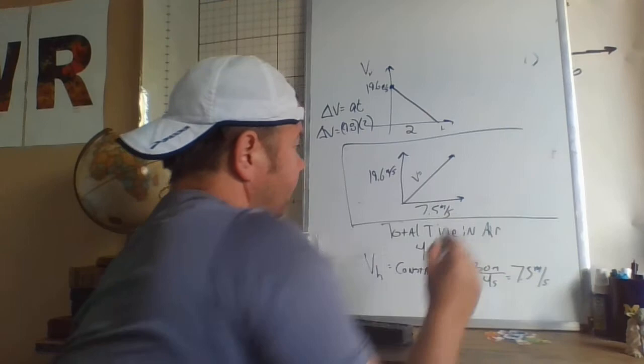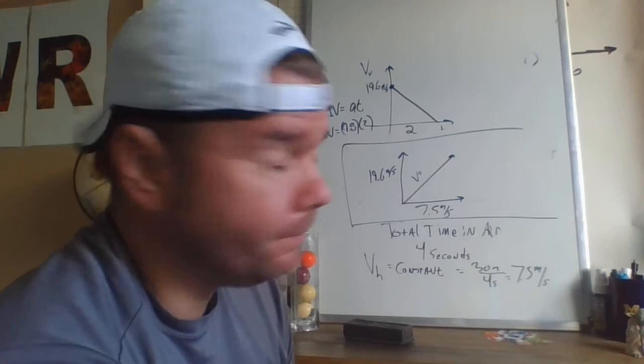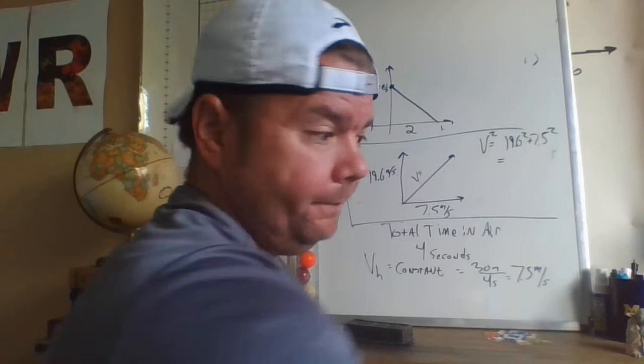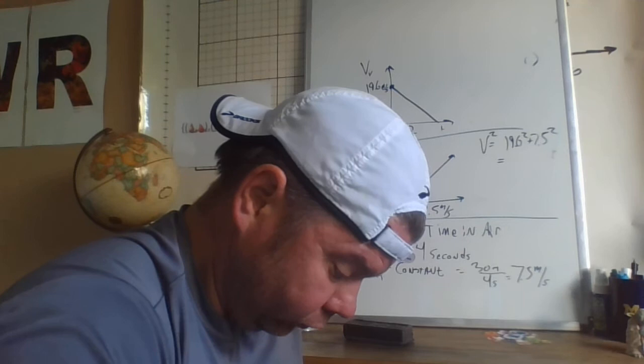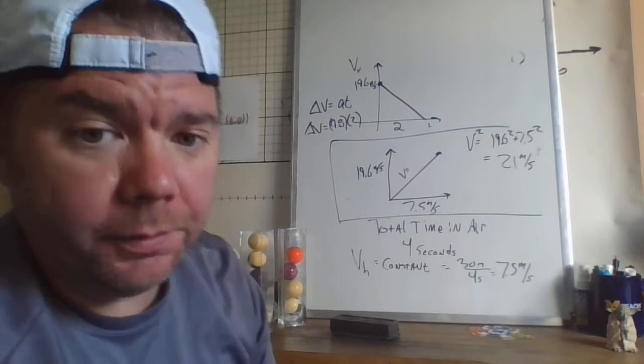So we have vertical velocity is 19.6 meters per second, we have horizontal velocity is 7.5 meters per second, and the overall velocity is here. So how do you determine the length of the overall velocity? It's basically just the hypotenuse of that triangle. So overall velocity squared equals 19.6 squared plus 7.5 squared. That's probably something like 21 or 22. Let's see, 19.6 squared plus 7.5 squared, square root of that, yeah 20.985. So we'll just call it 21, 21 meters per second. That was the overall velocity with which the ball was thrown at some angle to make it stay in the air for total time of four seconds.